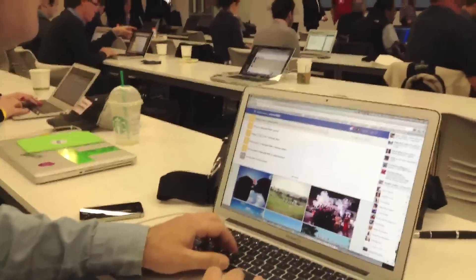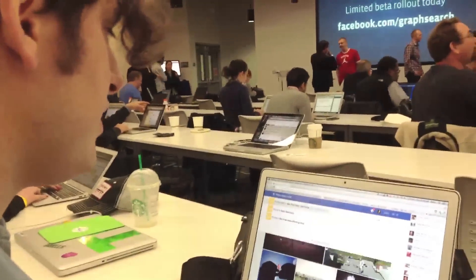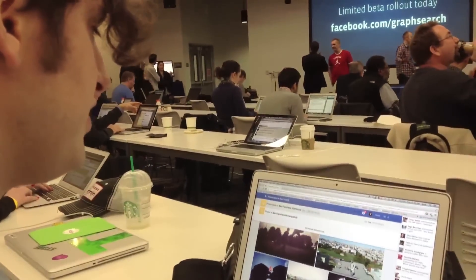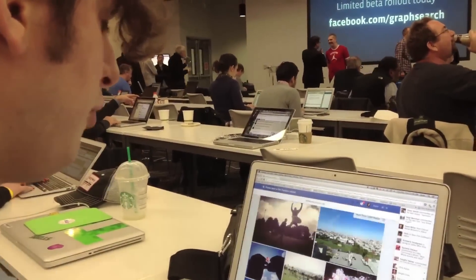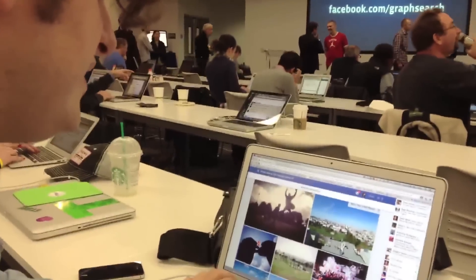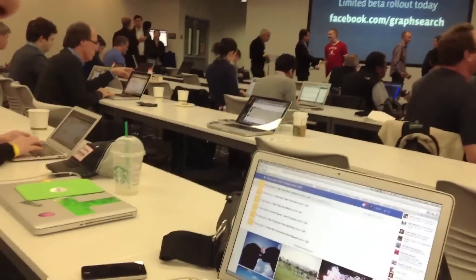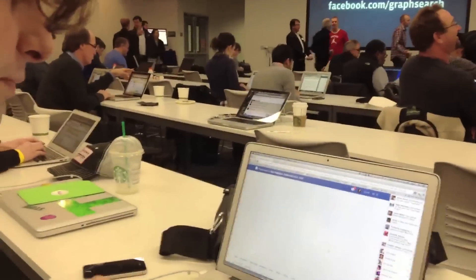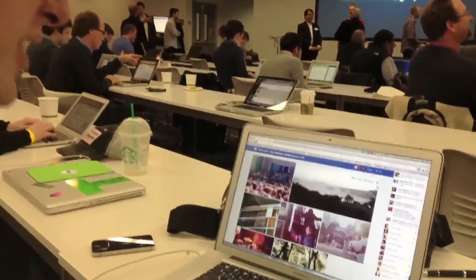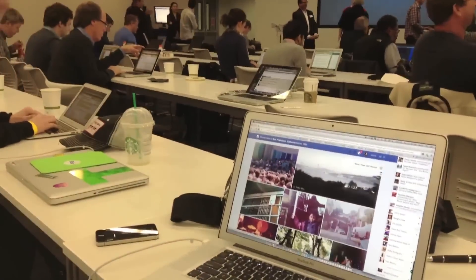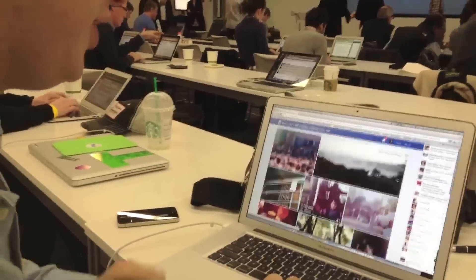I could also search for photos taken in San Francisco before 1990 if I wanted to see some old shots. You'd probably expect things that look like they were taken in Instagram, but no — these are real old photos.